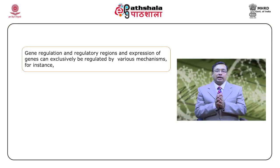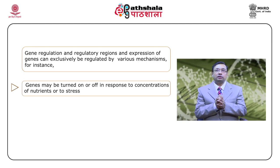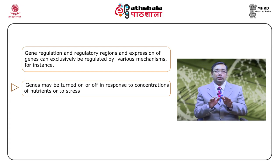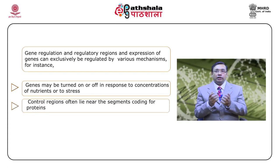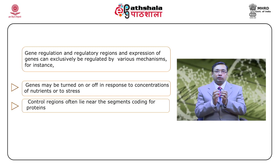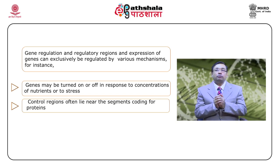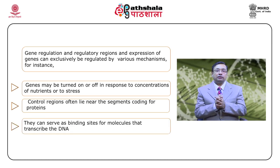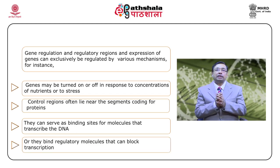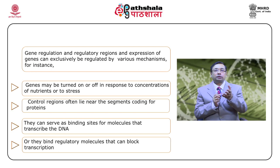Gene regulation and regulatory regions: expression of a gene can exclusively be regulated by various modalities. For instance, genes may be turned on or turned off in response to concentration of nutrients or to stress. In case of stress, certain genes are highly expressed whereas many genes are down-regulated. Control regions often lie near to segments encoding the protein. These regulatory elements can be up- or down-regulated depending on the situation encountered by the body or cell — serving as binding sites for molecules that transcribe DNA or for regulatory molecules that can block transcription, thereby accelerating or retarding gene expression.